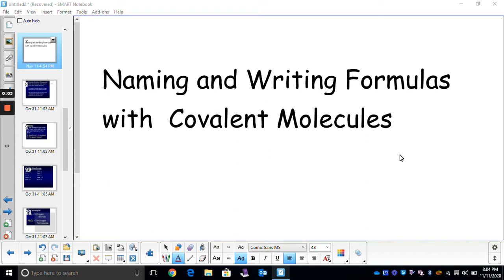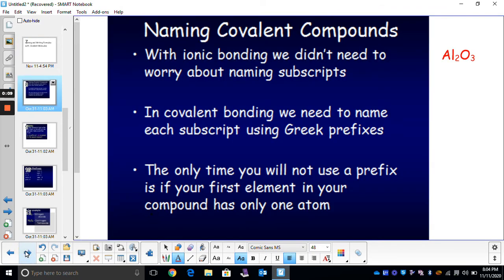Naming and writing formulas with covalent molecules is a little bit different than ionic. Before, with ionic compounds like Al2O3, we would just say aluminum oxide. We did not have to worry about the subscripts, the 2 and the 3. We would just say aluminum for your cation, oxide for your anion. And that was it.